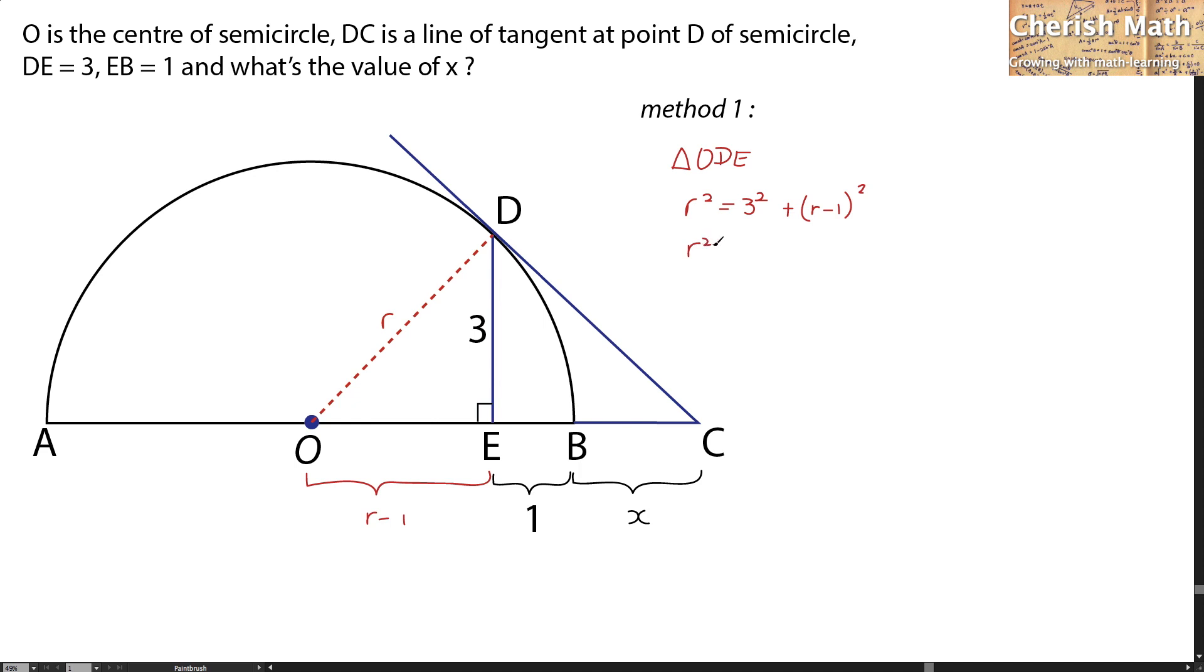So I'm going to solve this now. That would be 9 plus R squared minus 2R plus 1. And R squared is offset.